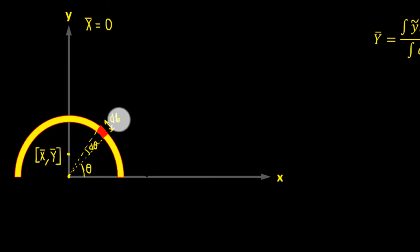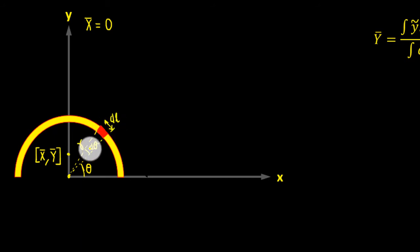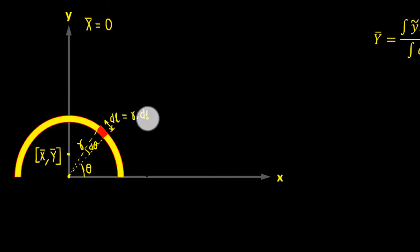Let's assume this length to be DL. There is a direct relationship between the radius, the arc length, and theta: DL is equal to R·dθ. So in place of DL we're going to substitute R·dθ.